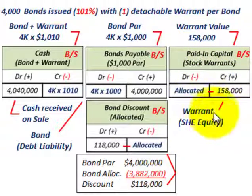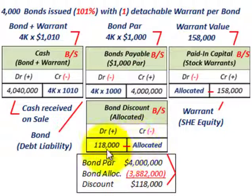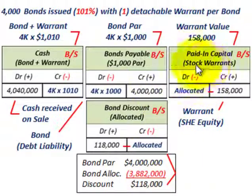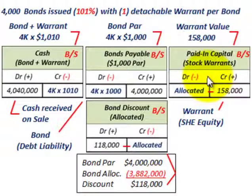The paid-in capital for stock warrants is part of shareholders' equity, whereas the bonds are a liability account. Just to clarify the bond discount: par value was $4,000,000, allocated amount was $3,882,000, and the difference is the $118,000 discount. The key focus is on this paid-in capital for stock warrants, because this is where it comes into play when we execute some of these warrants.